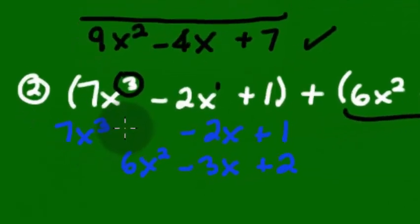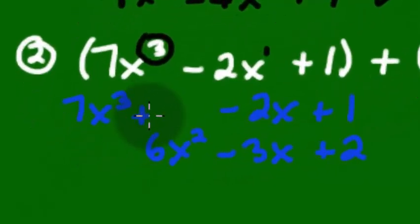As a matter of fact, what some students like to do is insert a placeholder. They'll say that for our first polynomial, there was no x squareds. There was 0x squareds in that problem.